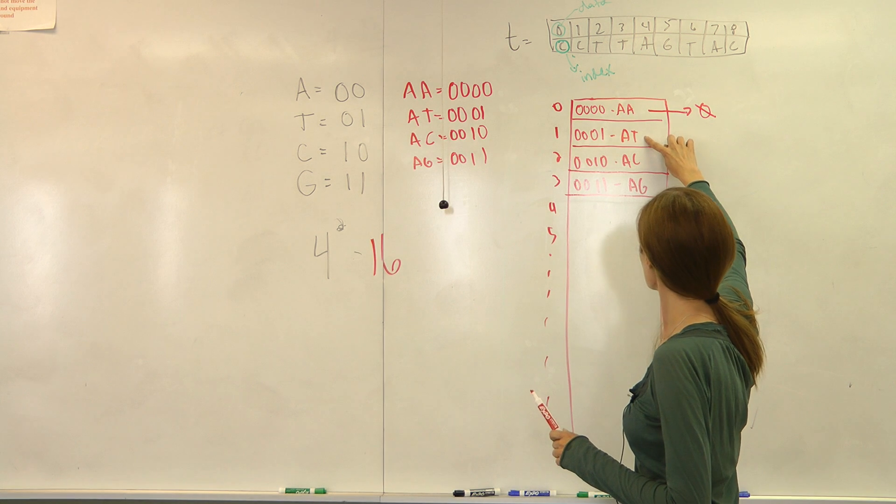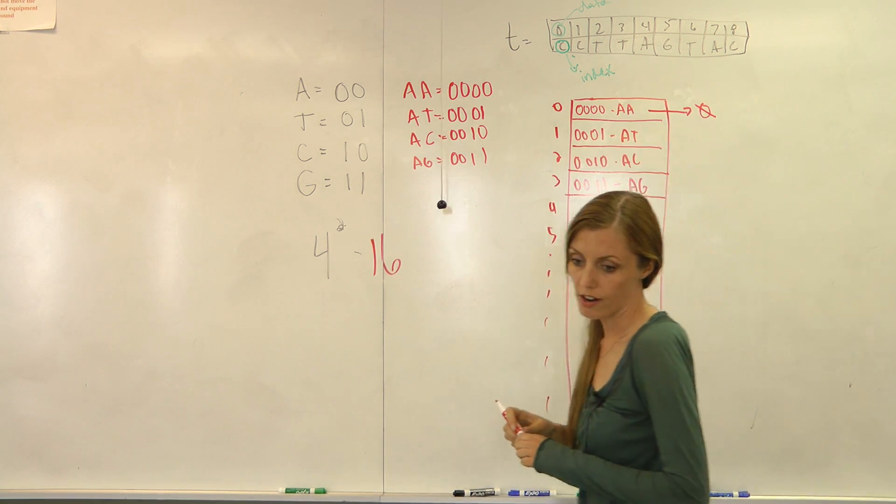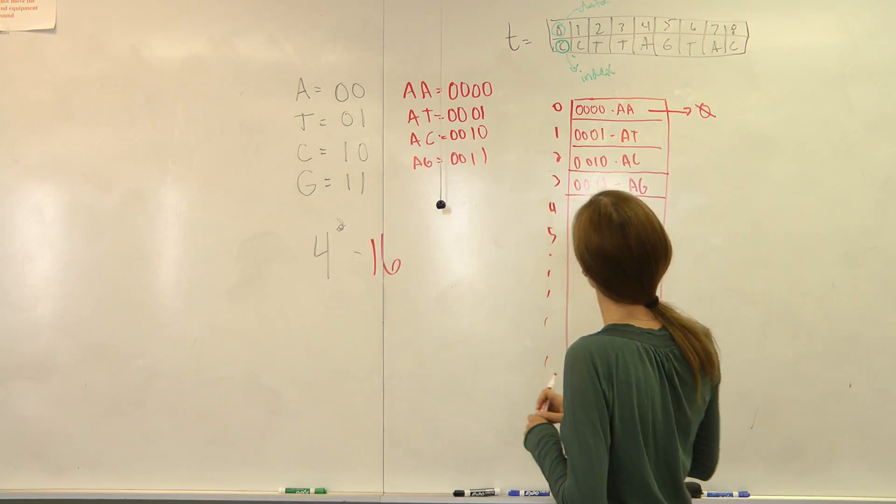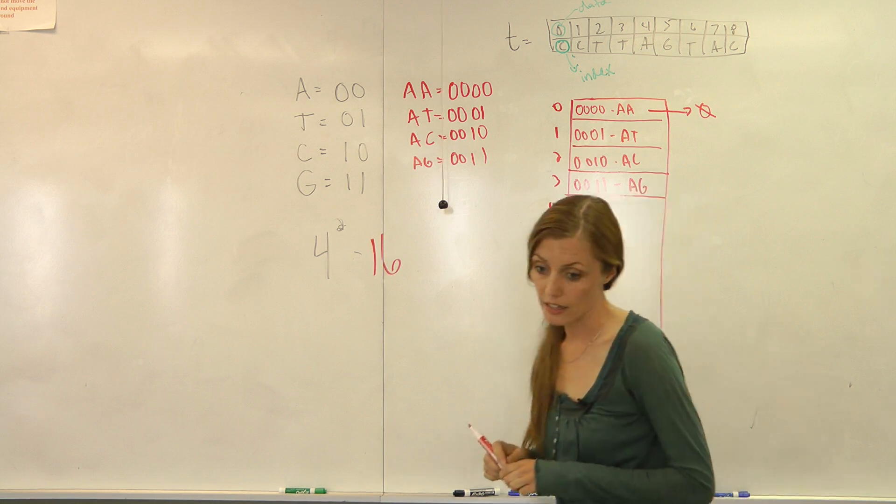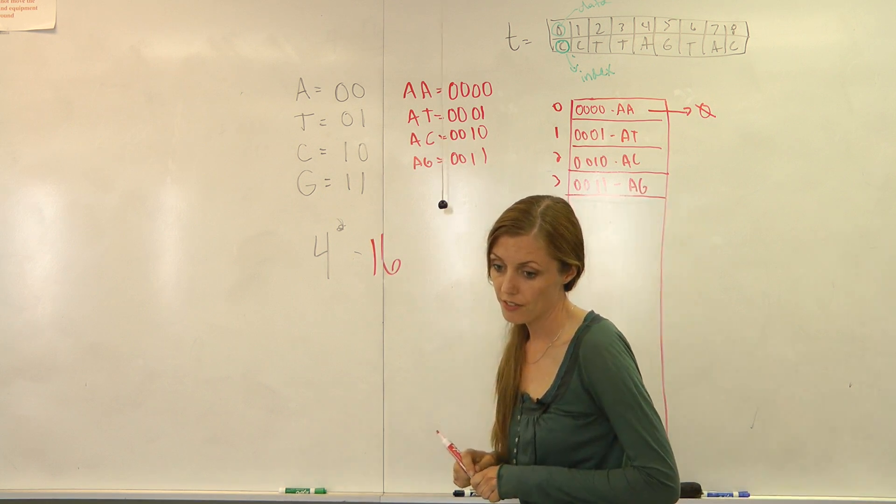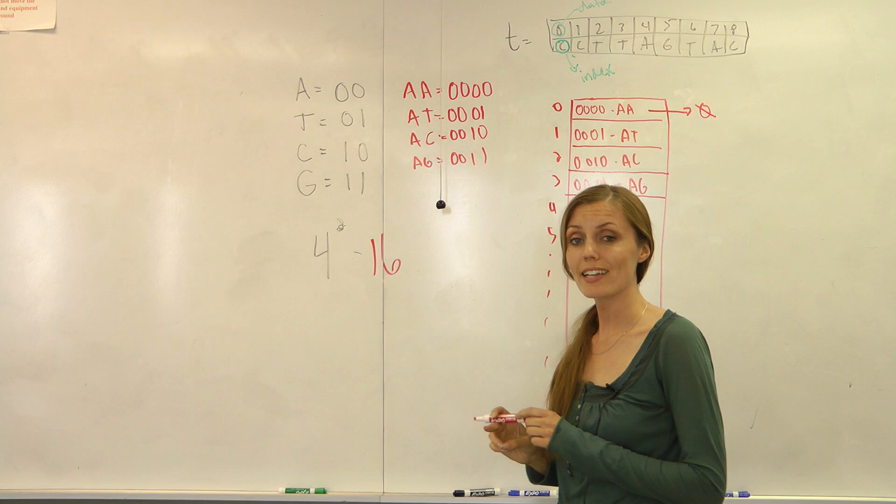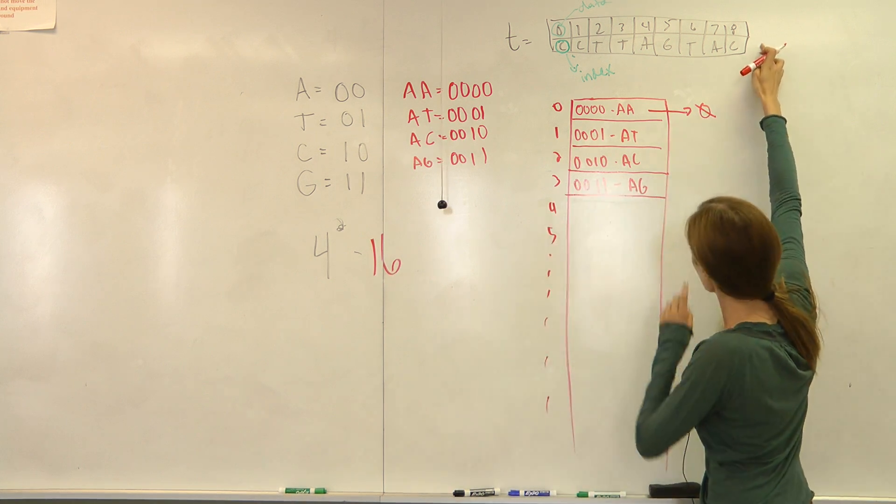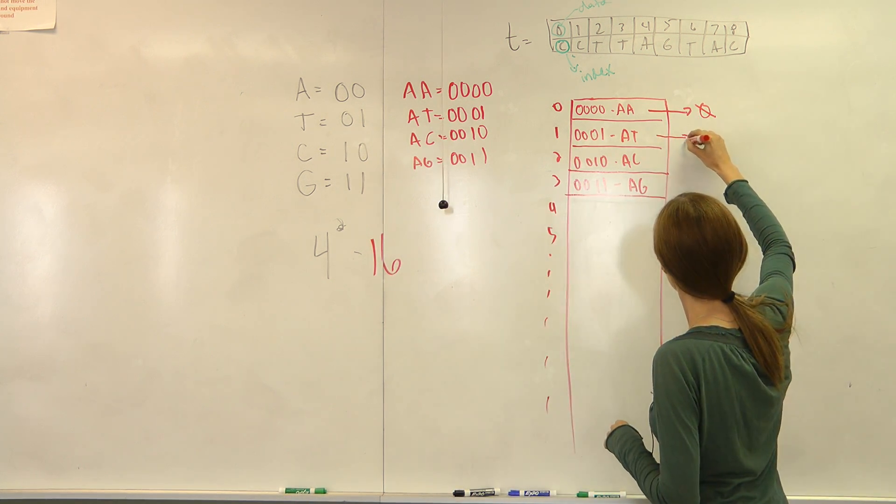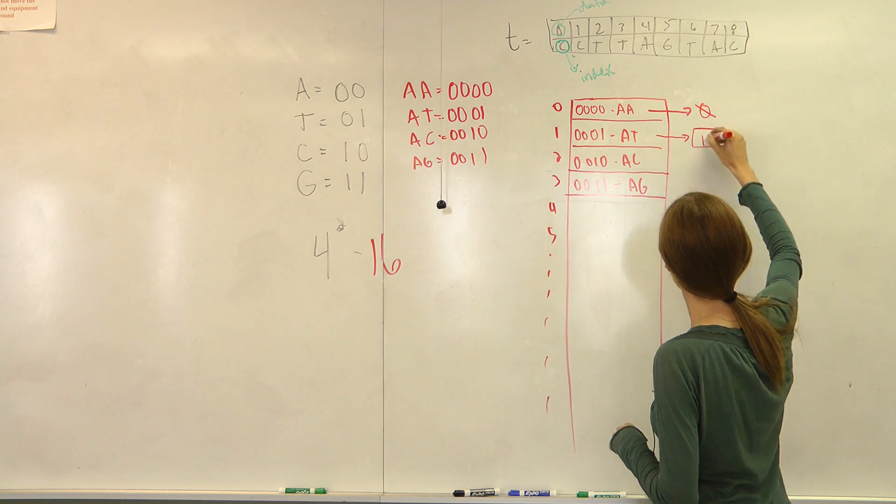The next one is AT. So we check our text, and there is an occurrence of AT that starts at index 18 in our text. So we enter the value of 18.